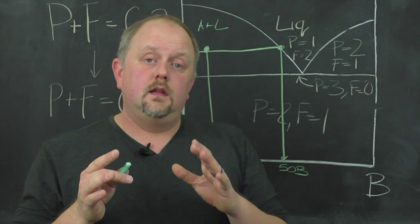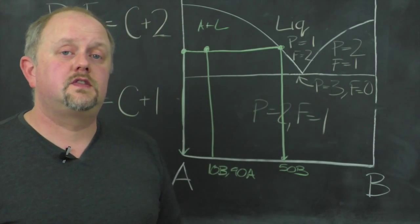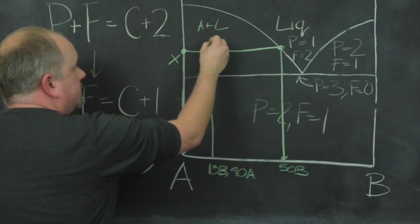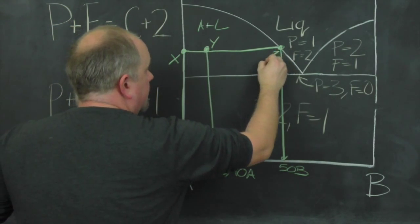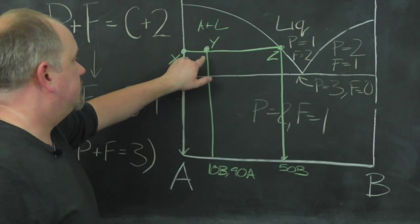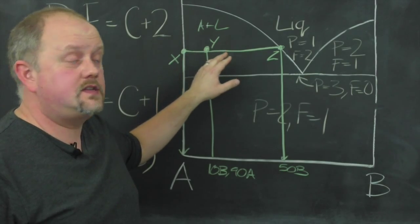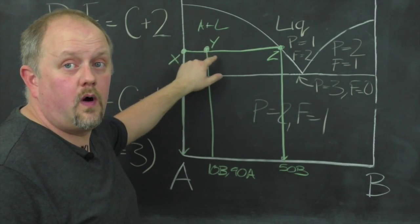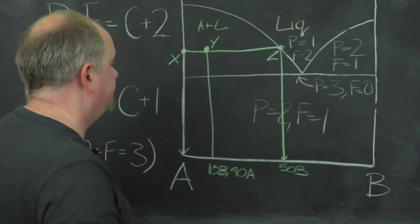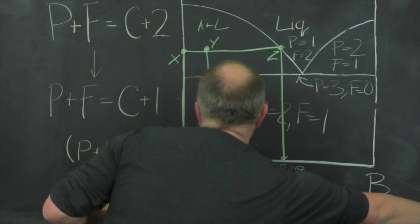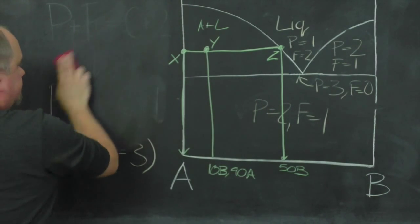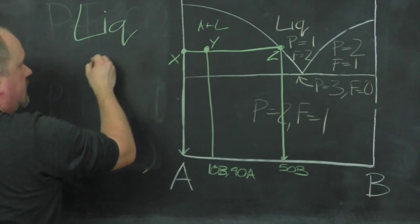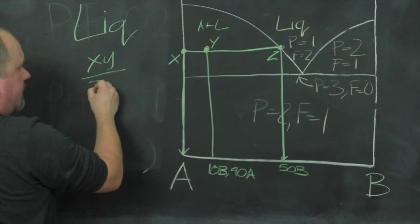Now, the lever rule comes into its own here because that will tell us the relative concentrations of both of those phases. So if we label these up x, y, and z here, the fraction of liquid in this system at this point here is given by the distance x, y over x, z. So if I write this up to the left here, so the fraction of liquid is x, y over x, z.